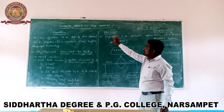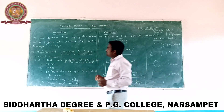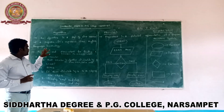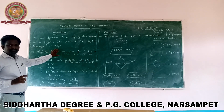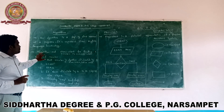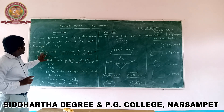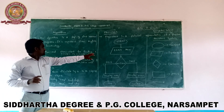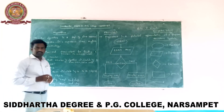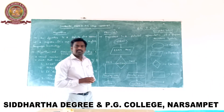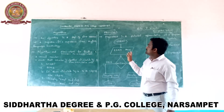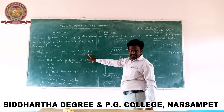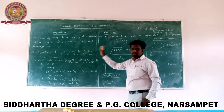Now, algorithm and flowchart — I am giving one example: finding whether a number is even or odd. This problem will be solved using both algorithm and flowchart.